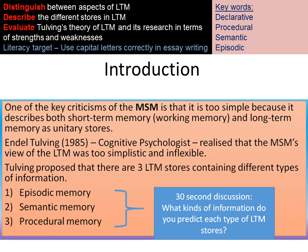Tulving's explanation of long-term memory is based on the ideology of the MSM, which is that semantic, short-term and long-term memory are in fact three different stores. However, Tulving criticizes the MSM, saying that its proposal for long-term memory is too simplistic, and he argues that within long-term memory there are three different types of stores: episodic memory, semantic memory, and procedural memory.